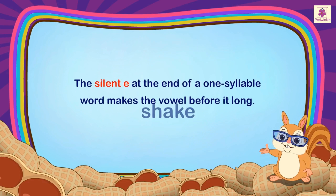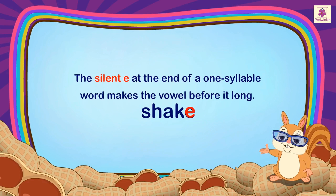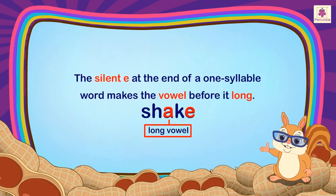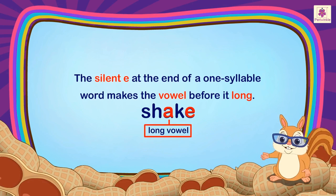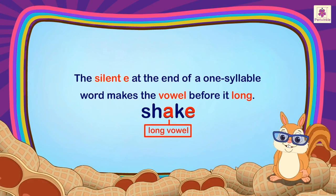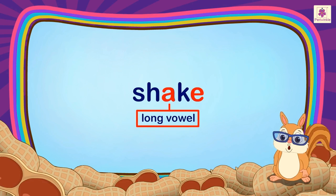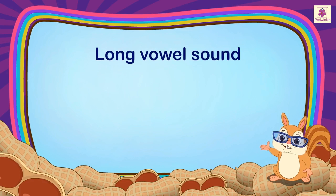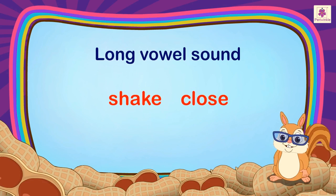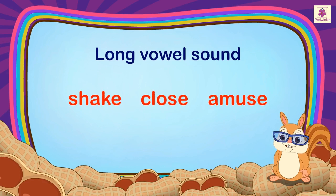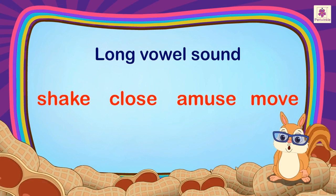The silent E at the end of a one-syllable word makes the vowel before it long. A long vowel mostly says its own name. Some words with long vowel sounds are shake, close, amuse, move.